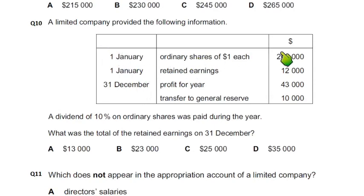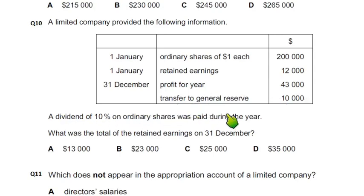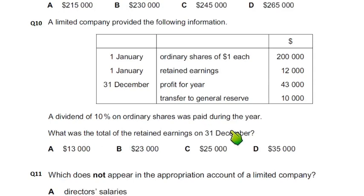Ordinary share capital is given, retained earnings are given, profit for the year transferred to general reserve is given. 10% of ordinary shares were paid during the year. The requirement is: what was the total of retained earnings? How much of retained earnings will be?